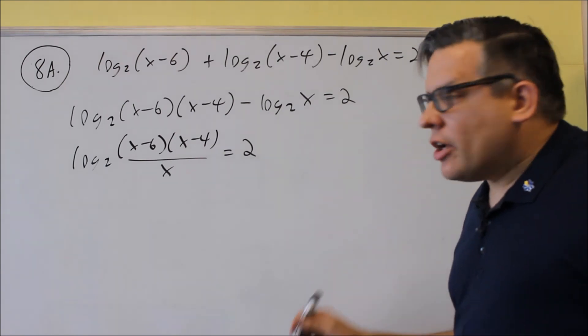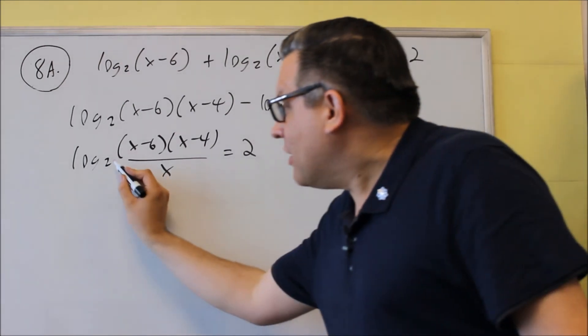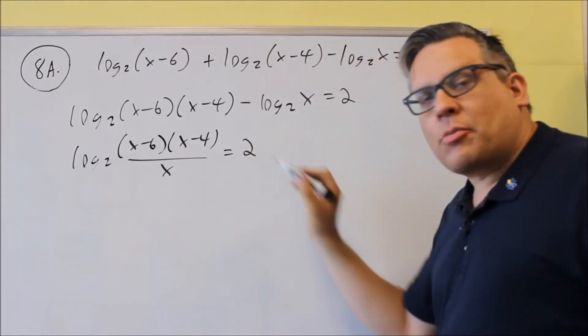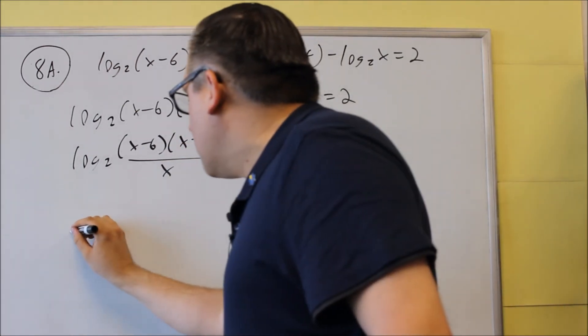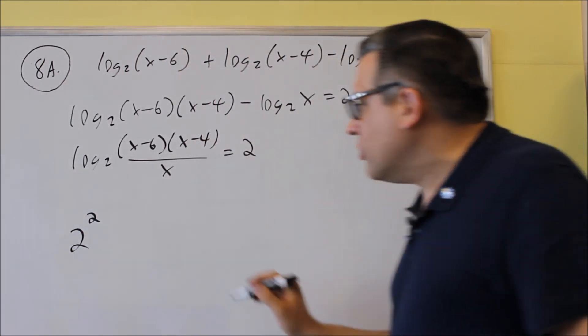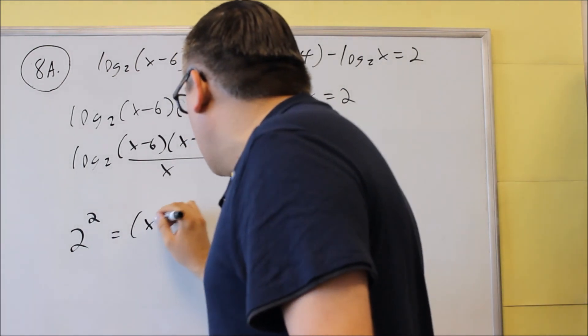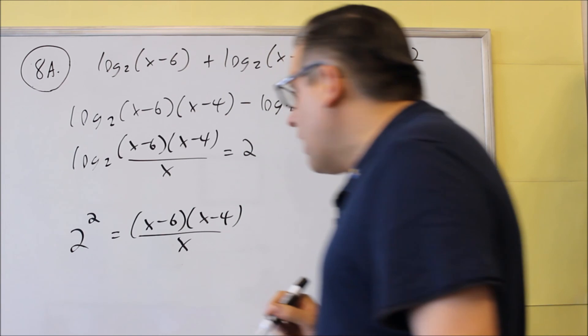At this point, you want to change from log form into exponential, and you do that by taking the base, raised to the number after the equal sign, will equal all this. So we have the base, the two, we're going to raise it to the number after the equal sign, raise it to a power of two. And that's going to equal x minus six, x minus four, all over x.